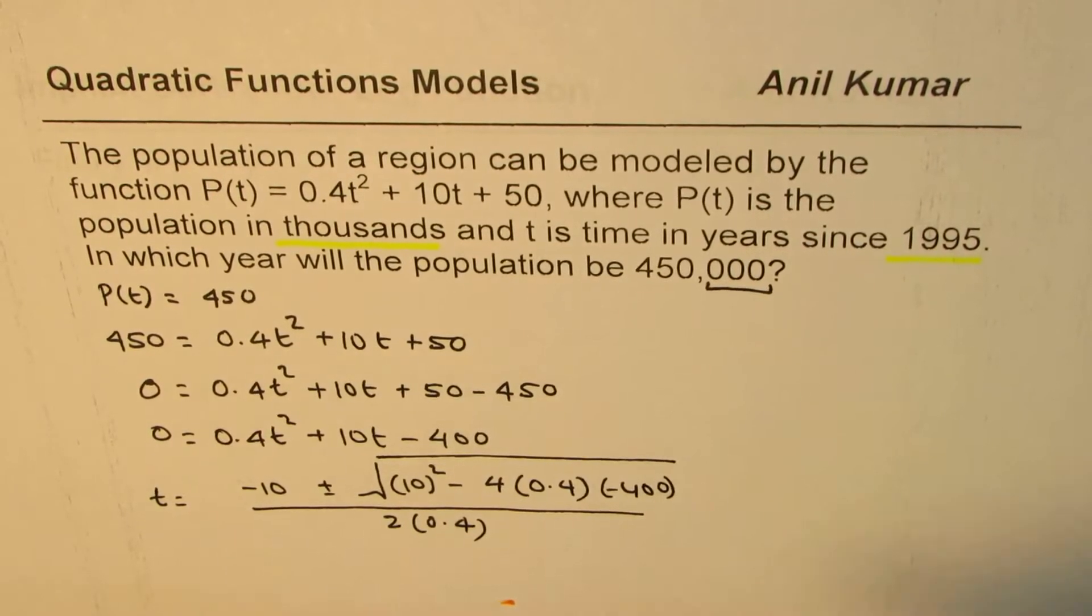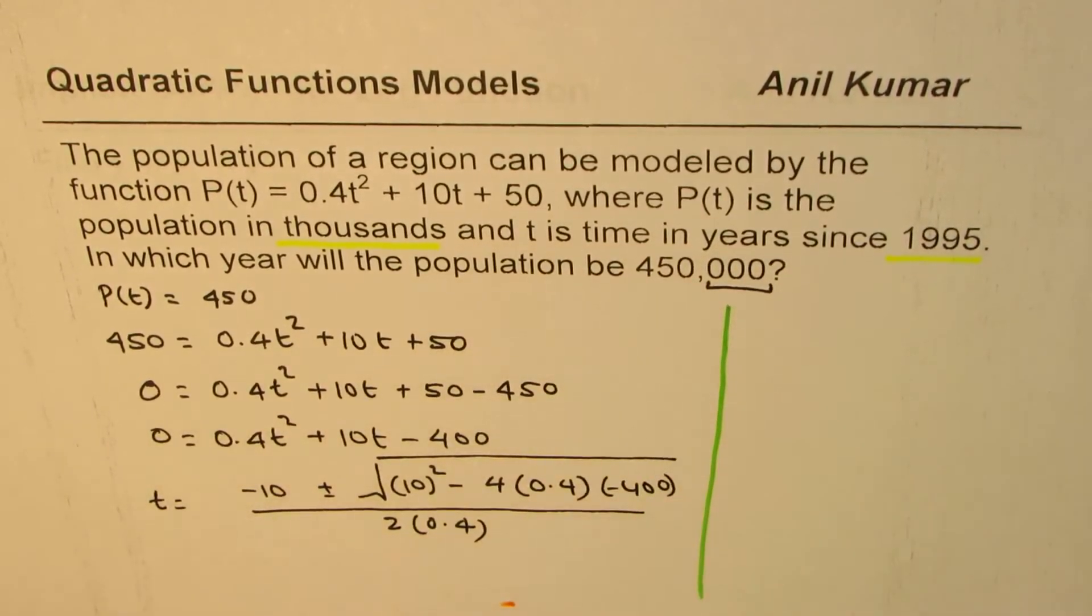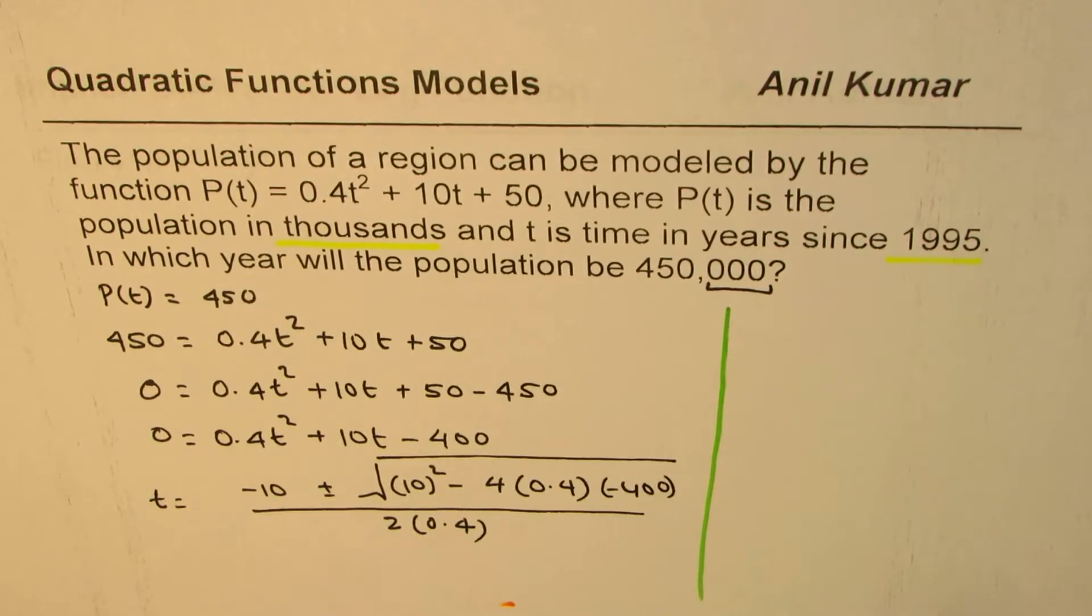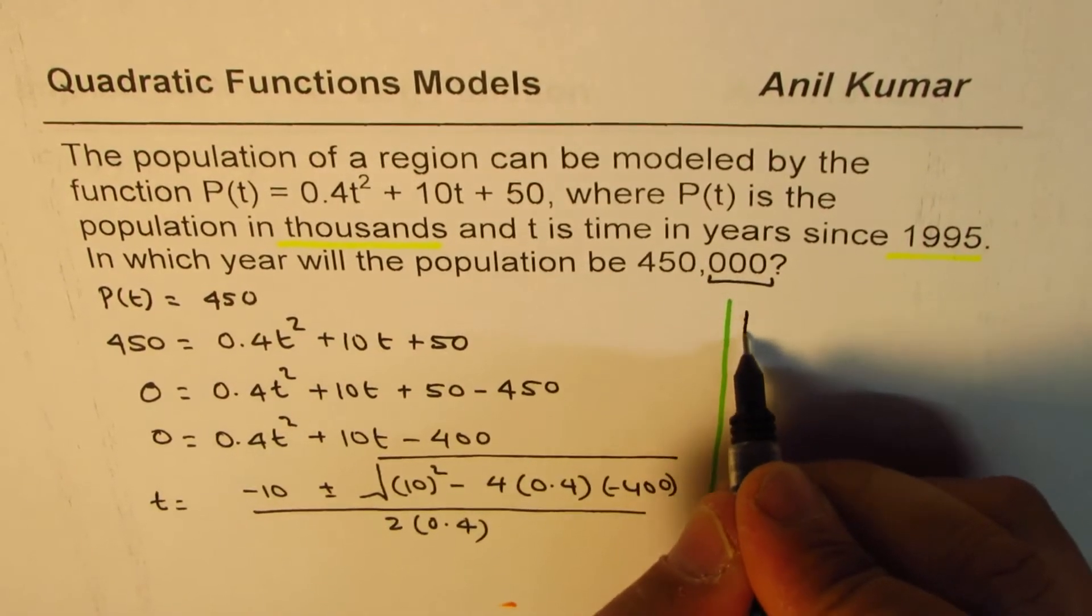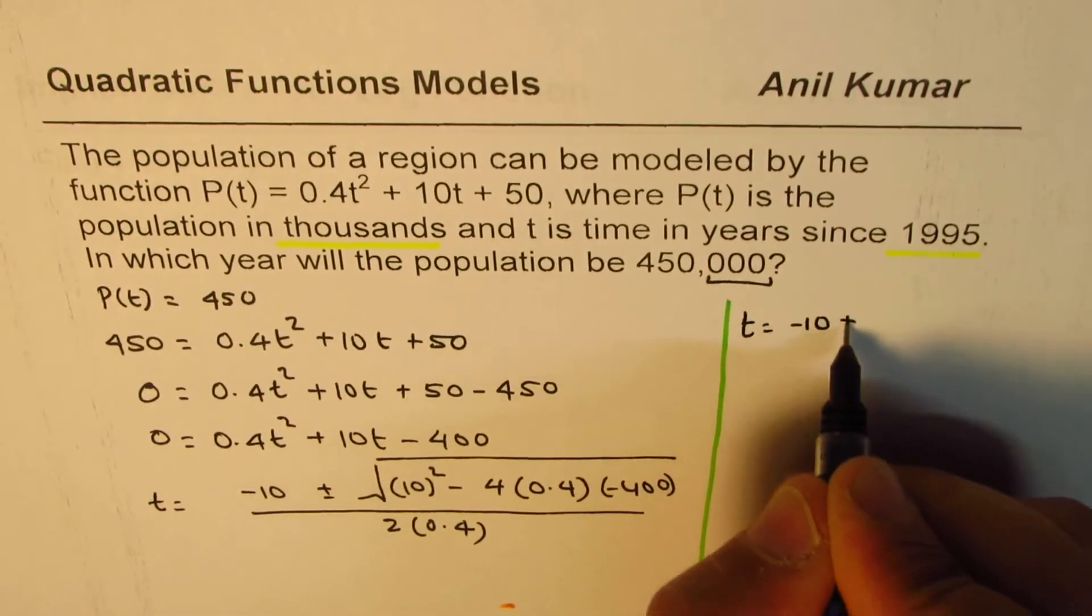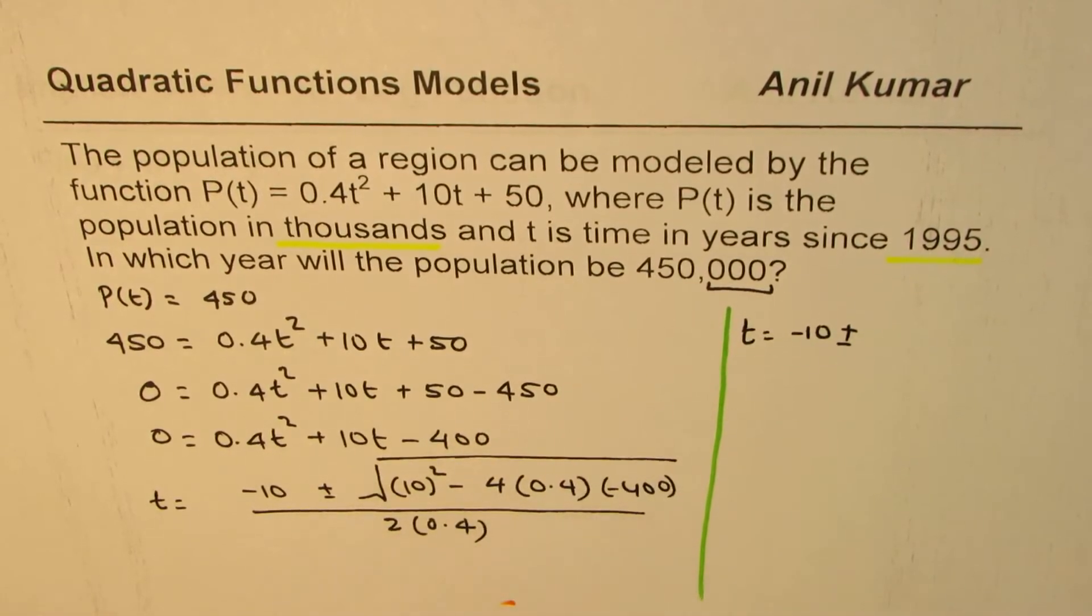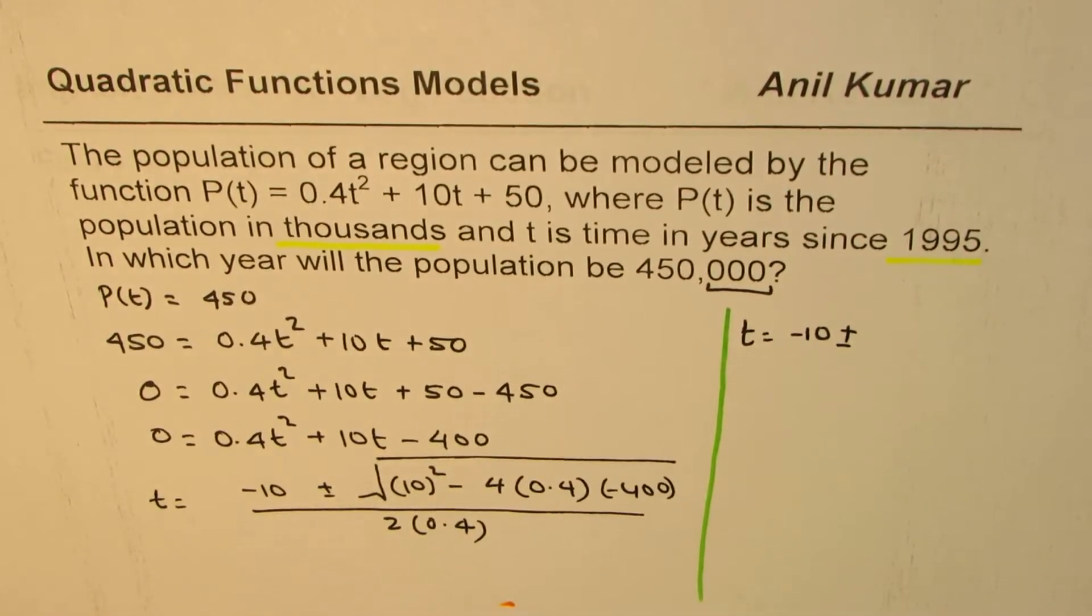So that is it, right, to get the solution. Now we can calculate all this. We have t = -10 ± ... Let's find this value.